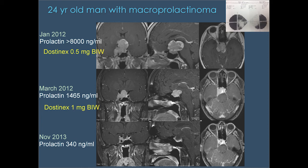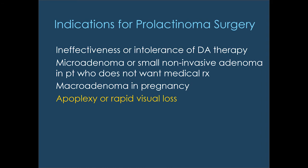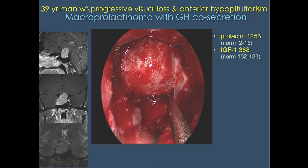That's why we don't operate on most prolactinomas — the medication response is excellent. Indications for surgery in prolactinoma include: ineffectiveness or intolerance of dopamine agonists; small non-invasive microtumors in patients who prefer surgery over lifelong medication given an 80% cure rate; prolactinomas that grow during pregnancy; or patients with bleeding into the tumor causing rapid visual loss.